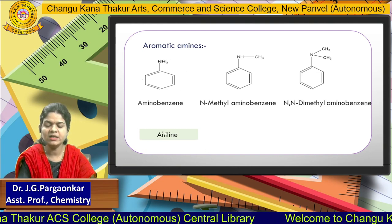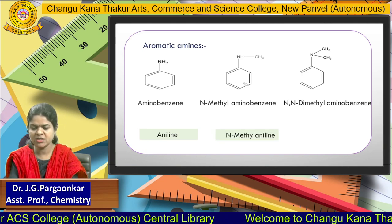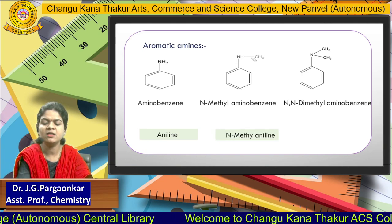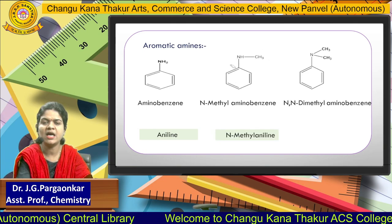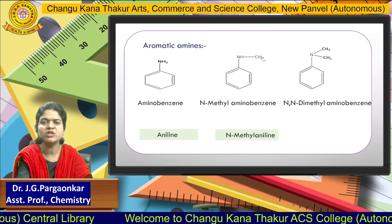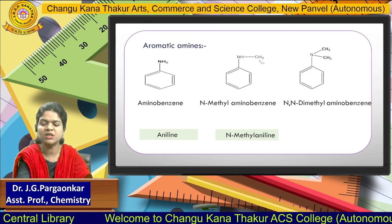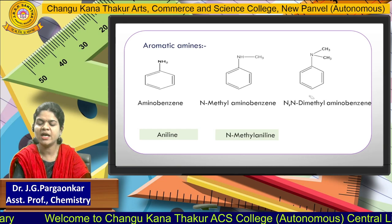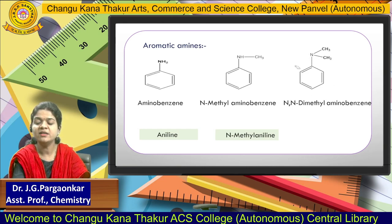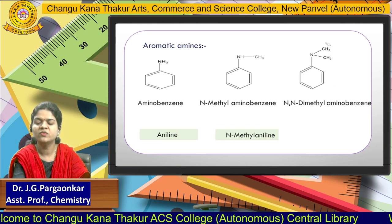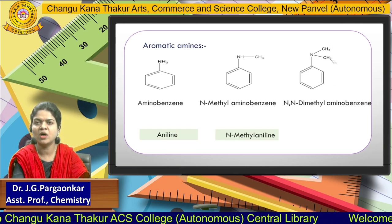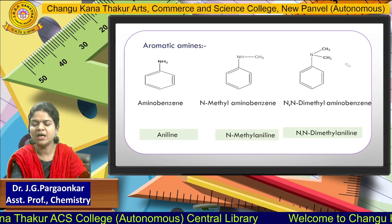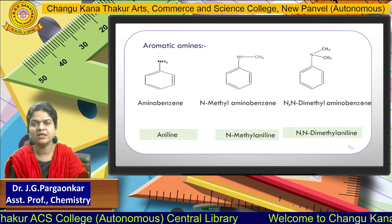The common name for the first structure is aniline. For the next, a methyl group is attached to nitrogen of aniline, so the common name is N-methylaniline. For the third structure, two methyl groups are attached to nitrogen of aniline, so the common name is N,N-dimethylaniline.